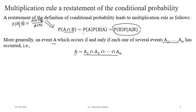You can generalize it like this: suppose you observe A₁ first, and after that you observe A₂ onward up to Aₙ. What would the probability of A be? Suppose you observe A₁ first — it would be P(A₁), then the conditional probability of A₂ given A₁. You can write it as a comma or as an intersection — both denote joint occurrence.